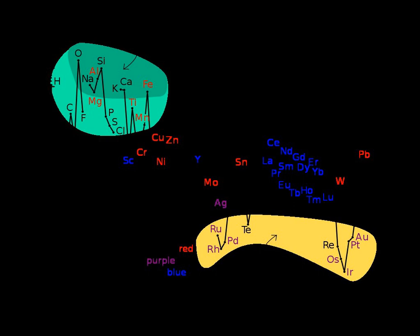In geochemistry, geophysics and geonuclear physics, primordial nuclides, also known as primordial isotopes, are nuclides found on Earth that have existed in their current form since before Earth was formed.